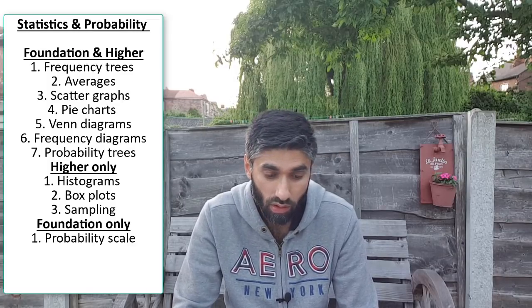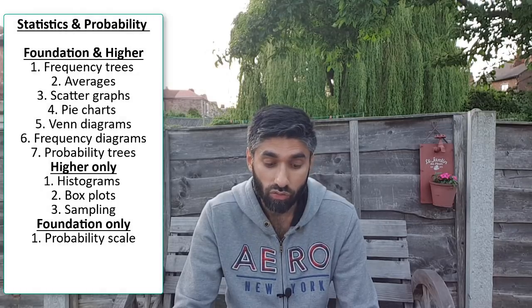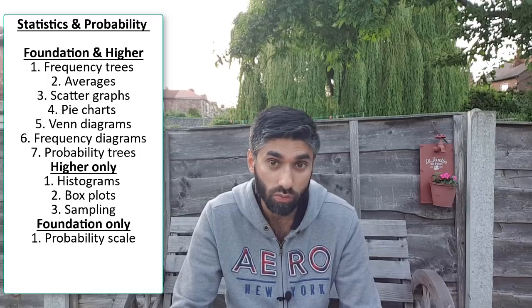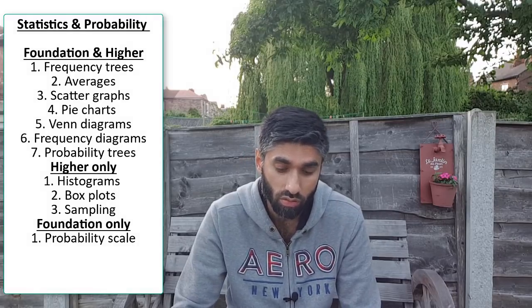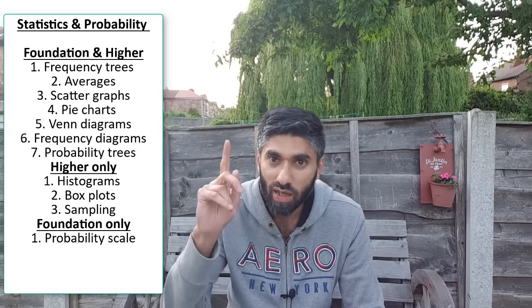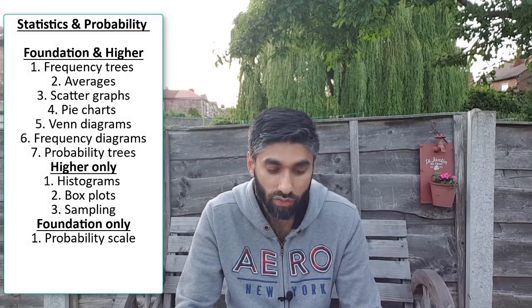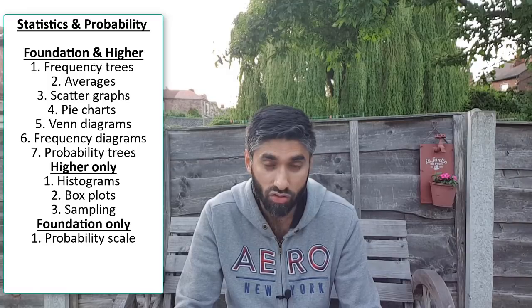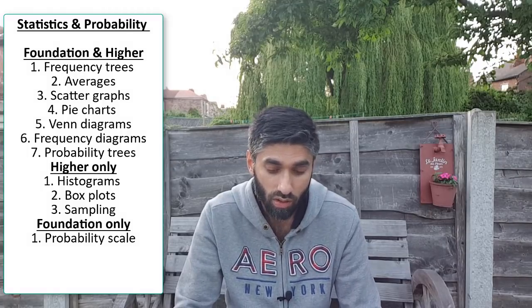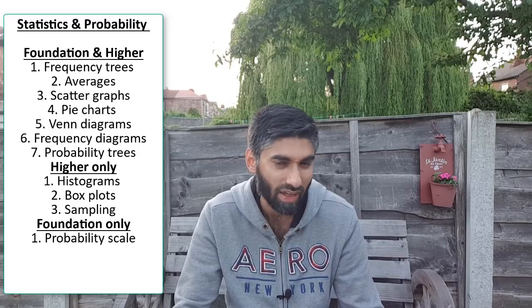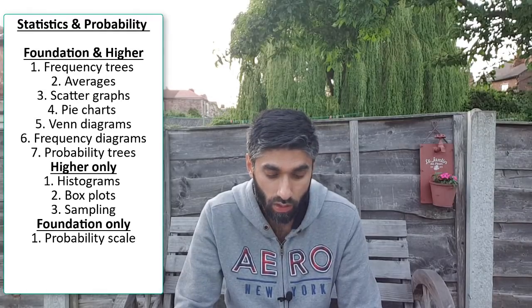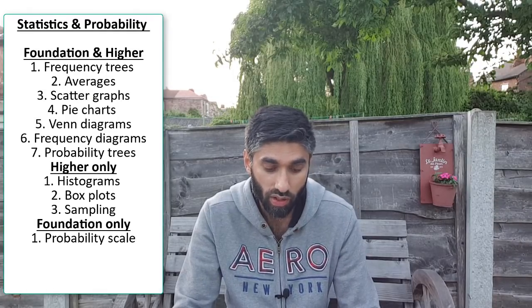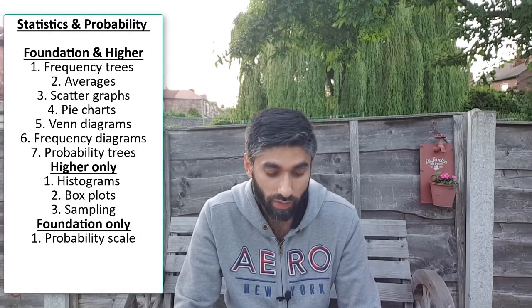The last section is statistics and probability. We've got frequency trees, averages — mean, median, mode, and range — including estimating the mean from tables and median from tables. I covered a question on this in an earlier revision video — check the links in the description. You've got scatter graphs, pie charts, Venn diagrams, frequency diagrams, and probability trees. Probability trees are foundation only, as there was already a probability tree diagram question on the higher paper — though it could possibly appear again. Higher only: histograms, box plots, and sampling. Foundation only: probability scale.